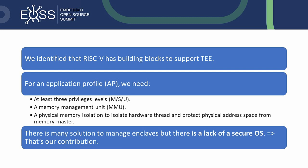In addition to the separation between the rich execution environment and the trusted execution environment running in S mode, user space and kernel space separation for each environment is also required. Each memory space may have a user or U permission flag. Supervisor mode sets the U flag so that the user cannot access the kernel memory space. While machine mode operates exclusively on physical addresses, supervisor and user mode access memory via virtual addresses. As PMP operates on physical addresses, the configuration of virtual addresses can be delegated to S mode without compromising security.